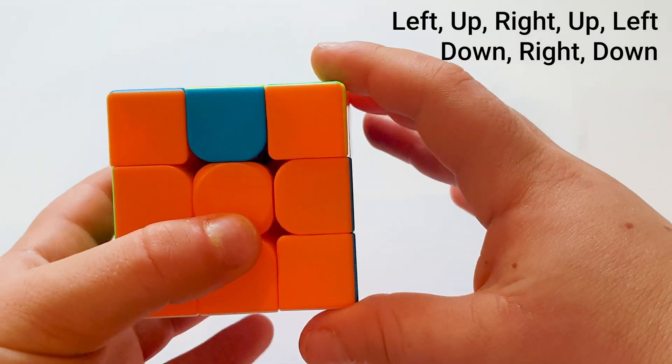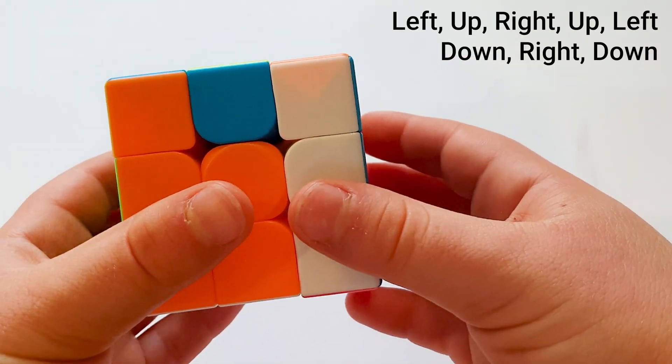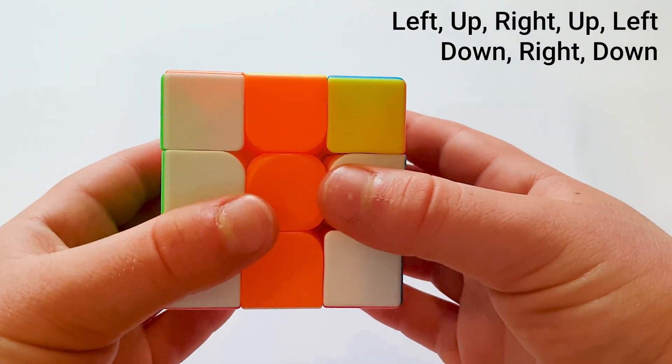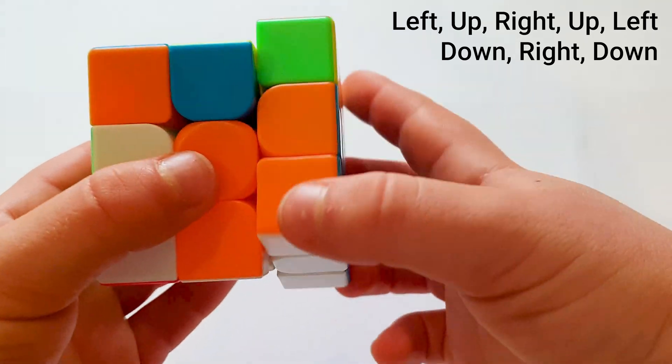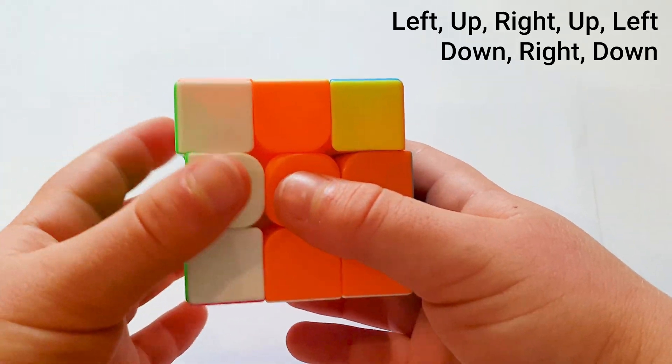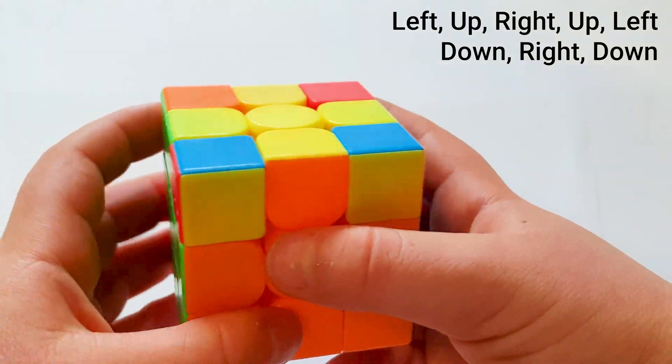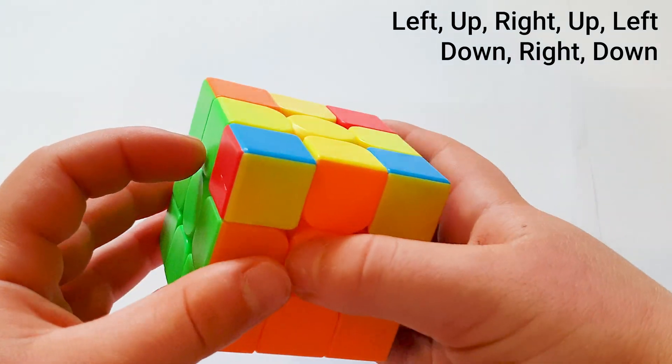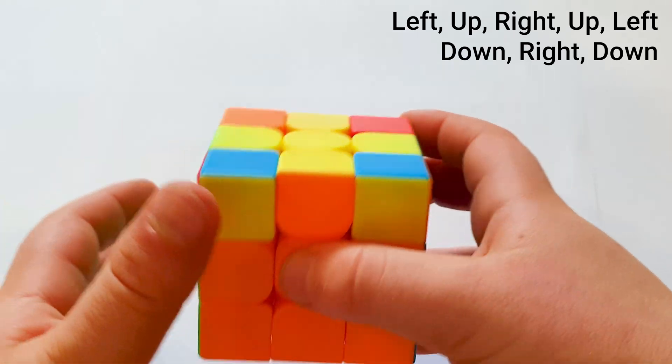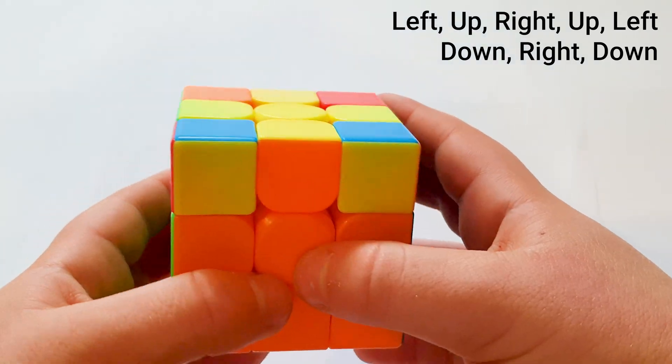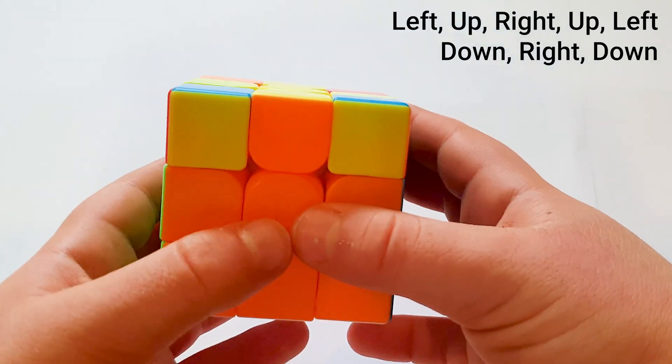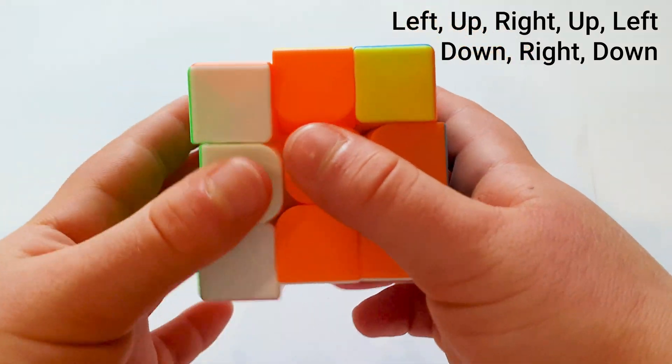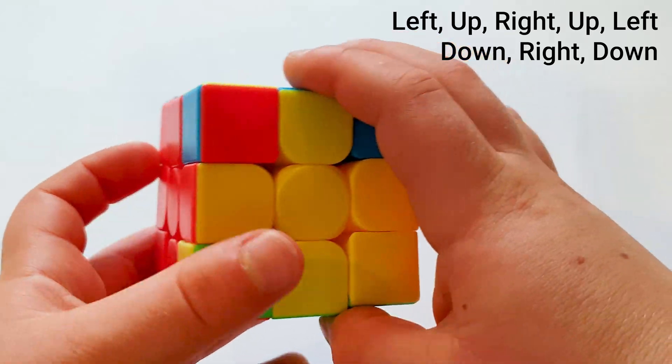So I put it on my right and I do the algorithm: Top left, right side up, top right, left side up, top left, right side down, top right, left side down. And they switched. You do it until all of them are matching. In this case, I will need to repeat it again. And they are matching.